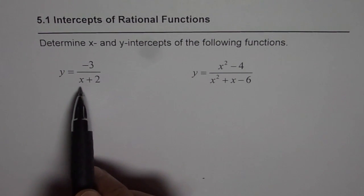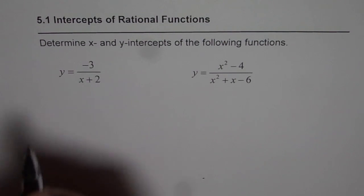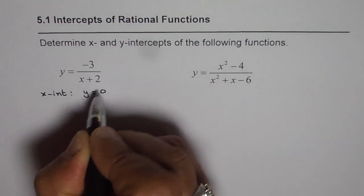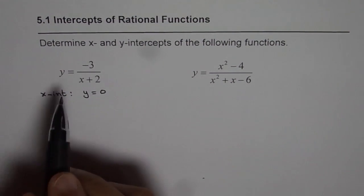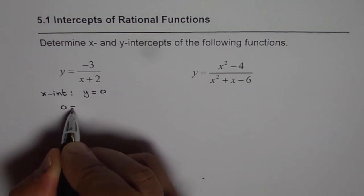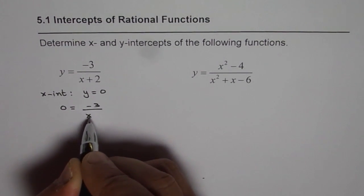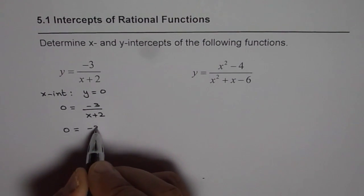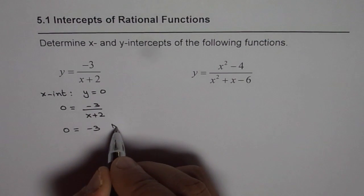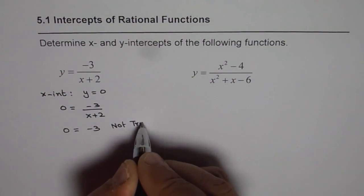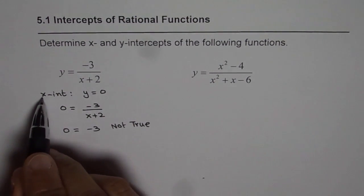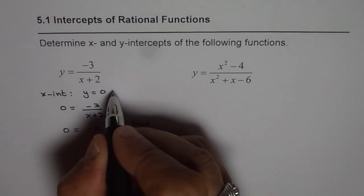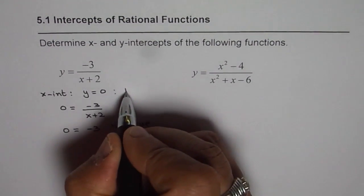y equals minus 3 over x plus 2. To find the x intercept, we need to substitute y equals 0. If I substitute y equals 0, I get 0 equals minus 3 over x plus 2. If I cross multiply I get 0 equals minus 3. Well that is not possible. Since that is not true we do not have any x intercept here. So it is none.